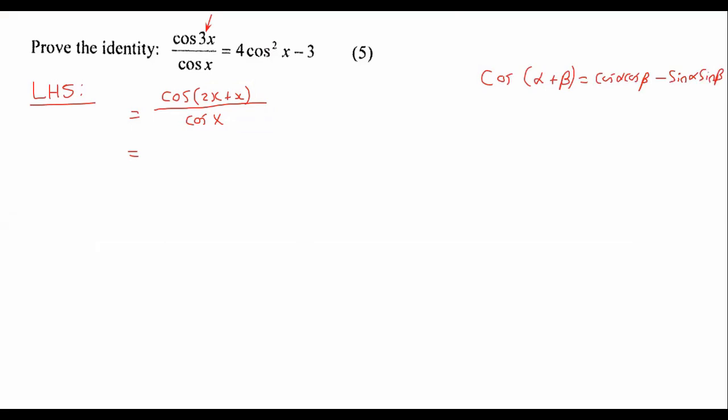Okay, I would use that one over there. And so that's going to become cos 2x cos x minus sin 2x sin x. And then at the bottom we're just going to have cos x.